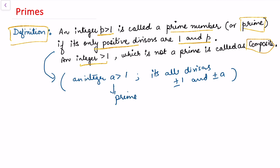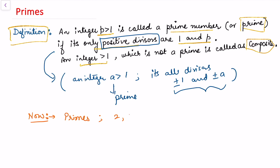In the definition I only considered positive divisors, but if we want to talk about all divisors, those four values are the possibilities for any prime number. The first few prime numbers are 2, 3, 5, 7, and so on — numbers divisible only by themselves and 1. Some composite numbers are 4, 6, 8, 9, 10, and so on.